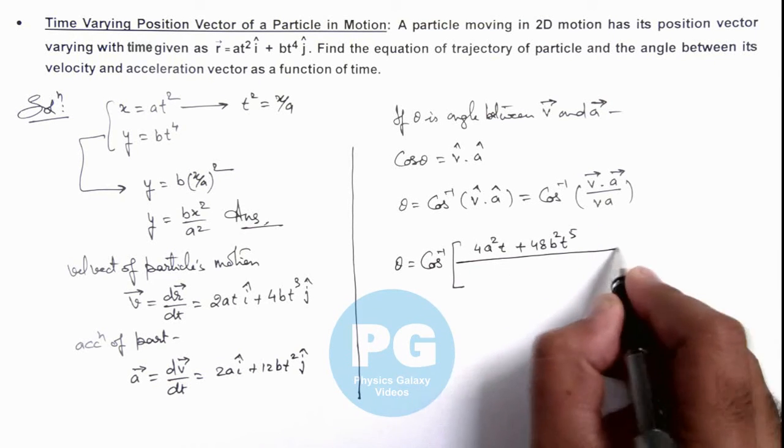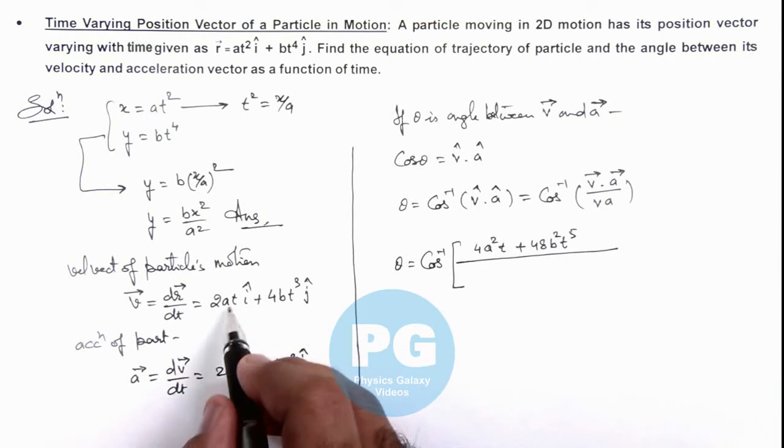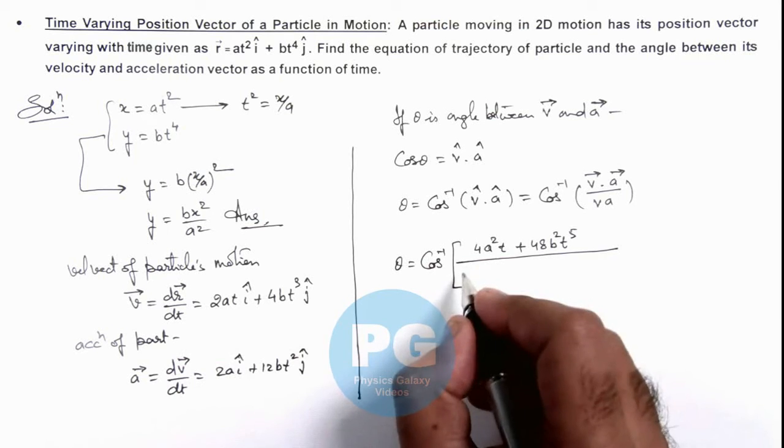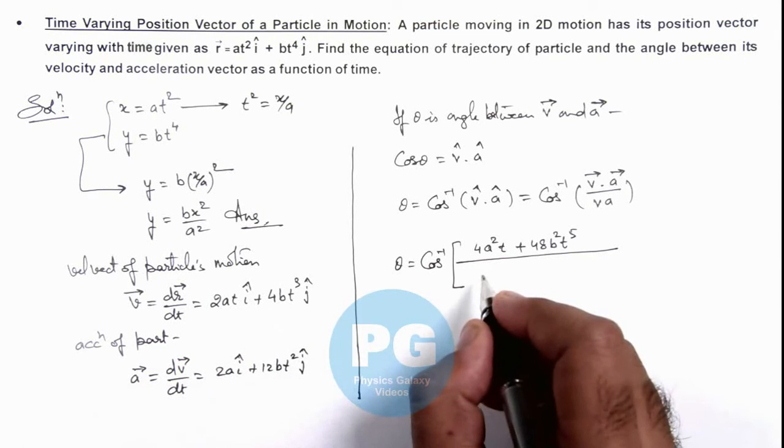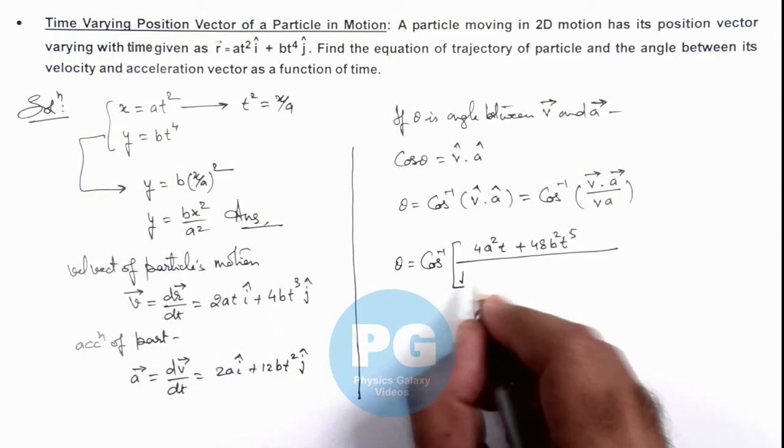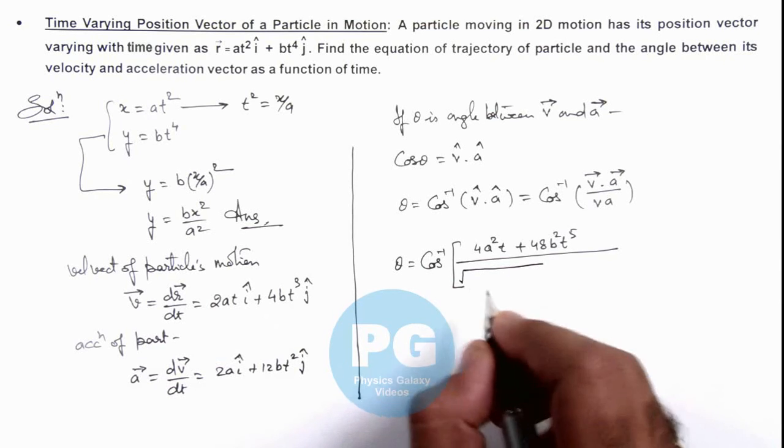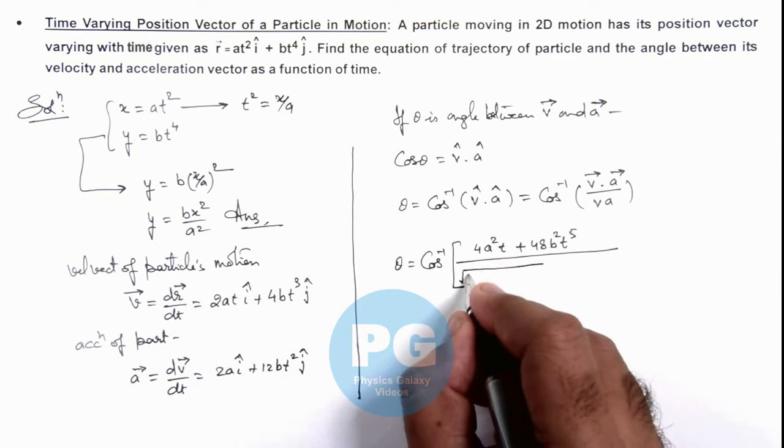In the denominator, we can write the magnitude of v⃗ and a⃗. The magnitude of v⃗ we can write as the root of 4a²t² plus 16b²t⁶.